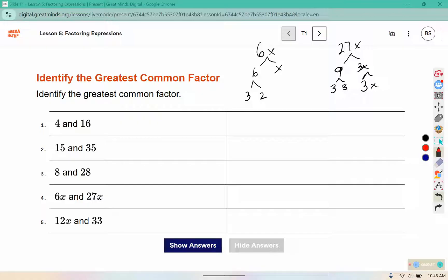So we look for the pieces at the ends of the branch that they have in common. So for number 4, the common factor, the greatest common factor is 3x.